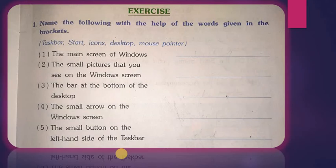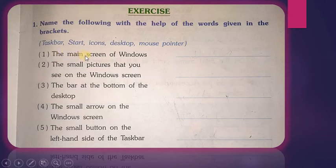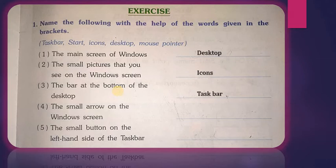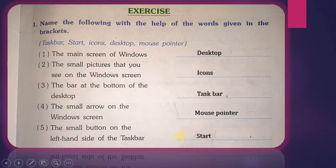If you click on the drop-down menu it will show different colors — that is Text Color. That was the previous lecture filling the blanks activity. Now the second activity: name the following with the help of words in the brackets. The main screen of Windows is the desktop. Small pictures you see on the Windows screen are icons. The bar at the bottom of the desktop is the taskbar. The small arrow on the window screen is the mouse pointer, and the small button on the left-hand side is the Start button.